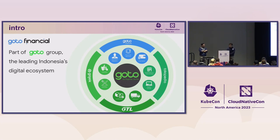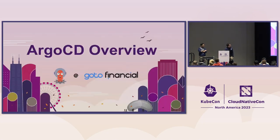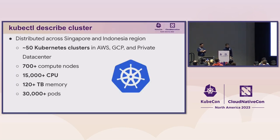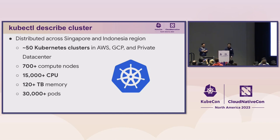We provide various service offerings from ride-hailing service using motorcycle, food delivery service, package delivery service, e-commerce platform, and many other services. We maintain around 50 Kubernetes clusters across AWS, GCP, and private data centers in Singapore and Indonesia. This consists of 700 compute nodes, 15,000 CPUs, 120 terabytes of memory, and more than 30,000 pods.